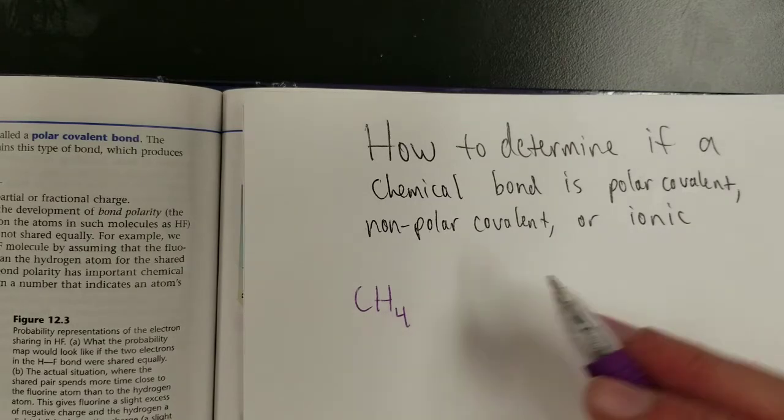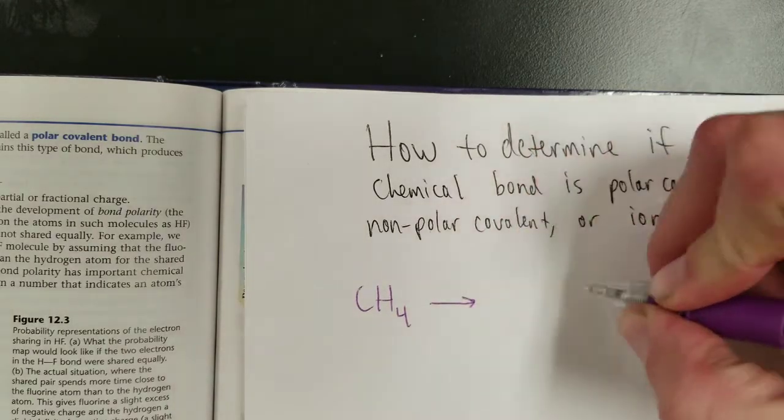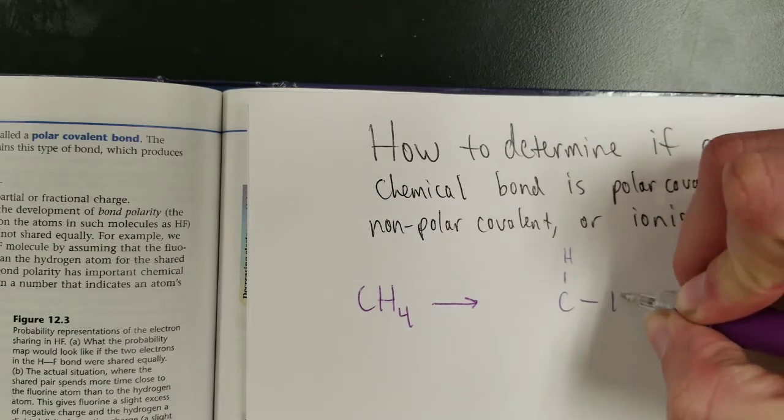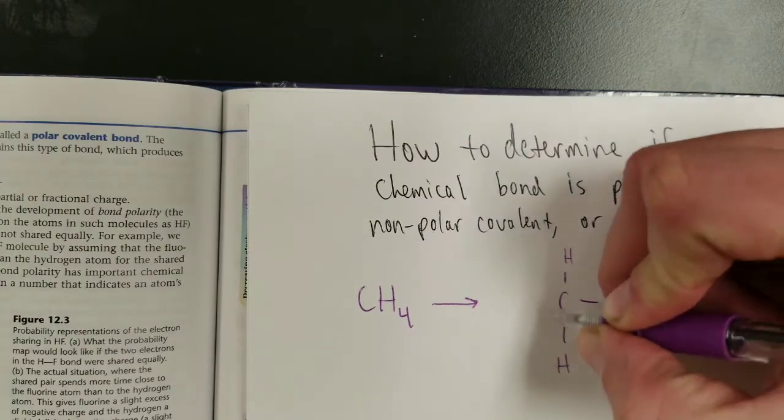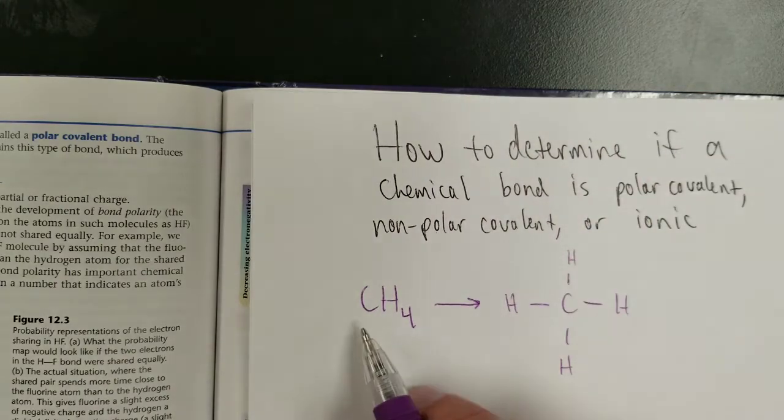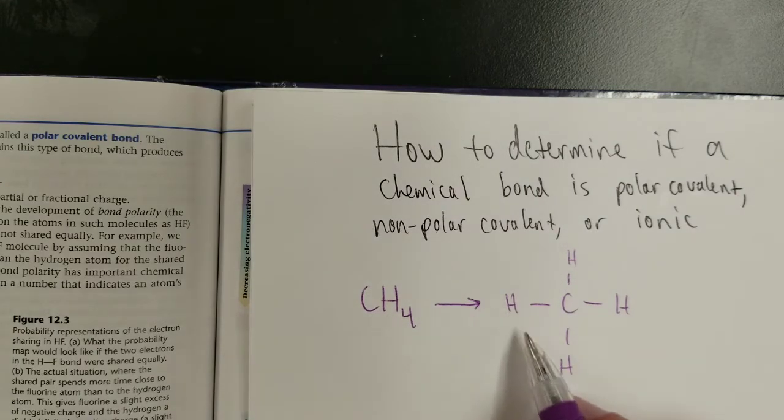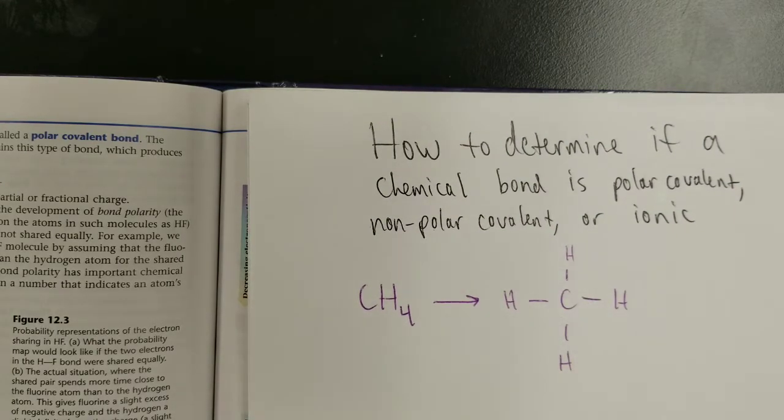Suppose I say you have the molecule CH4, and I ask you, are the bonds in this molecule polar covalent, non-polar covalent, or ionic? You have to understand that this is a reference to a molecule containing four carbon-hydrogen bonds. There's four carbon-hydrogen bonds. This is four hydrogens all around the central carbon. One, two, three, four carbon-hydrogen bonds.